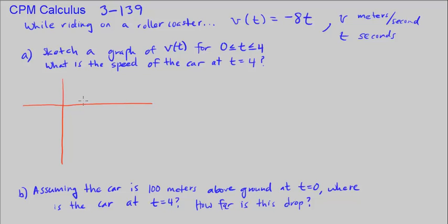I'm going to mark 1, 2, 3, 4 on the t-axis and 1, 2, 3, 4 on the velocity axis. This is t and this is velocity. This is basically a line passing through the origin with a slope of negative 8.